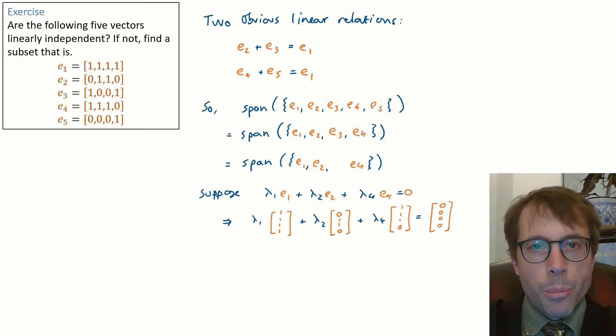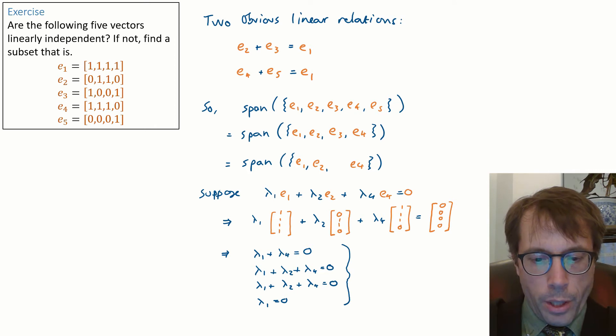And we try and solve for the lambdas. Just taking the vector equations row by row. Lambda 1 plus lambda 4 equals zero. Lambda 1 plus lambda 2 plus lambda 4 equals zero, dot dot dot.